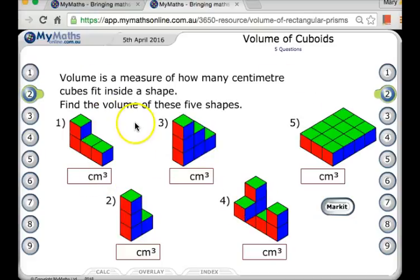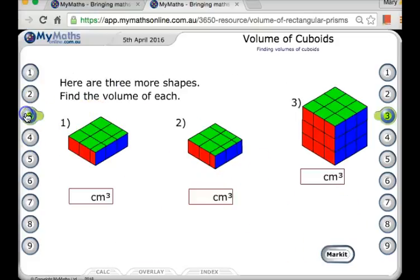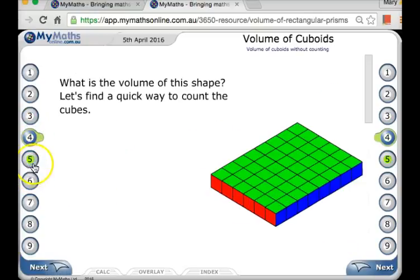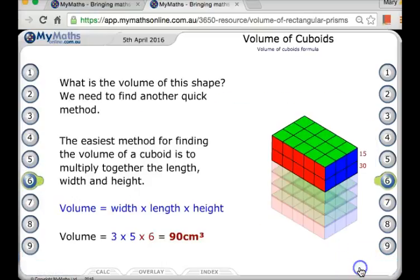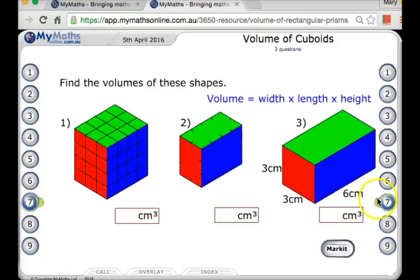You have to work out the volume of those five shapes by adding up the cubes. When you put your answers in, it will mark them. Do all those, go to the next screen, do the volumes by counting cubes. Then it'll introduce you to a faster way of doing it. Make sure you press Next and read everything carefully.